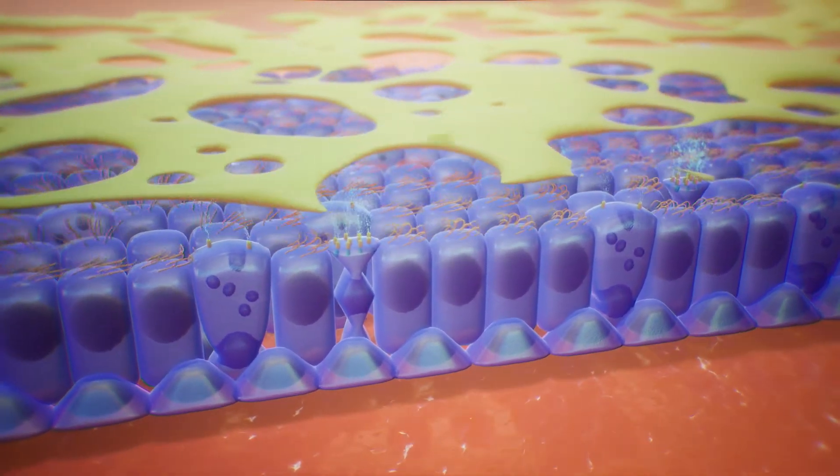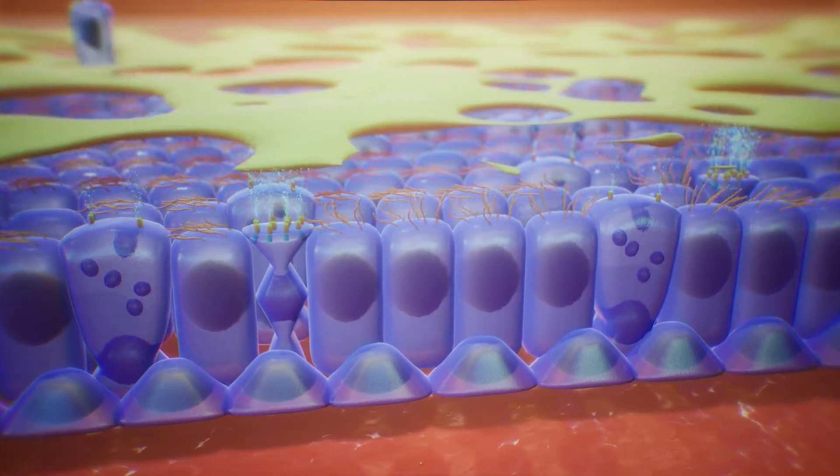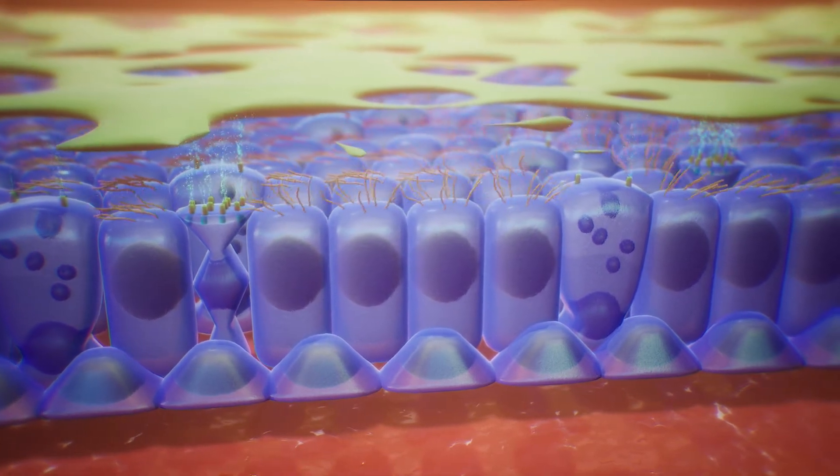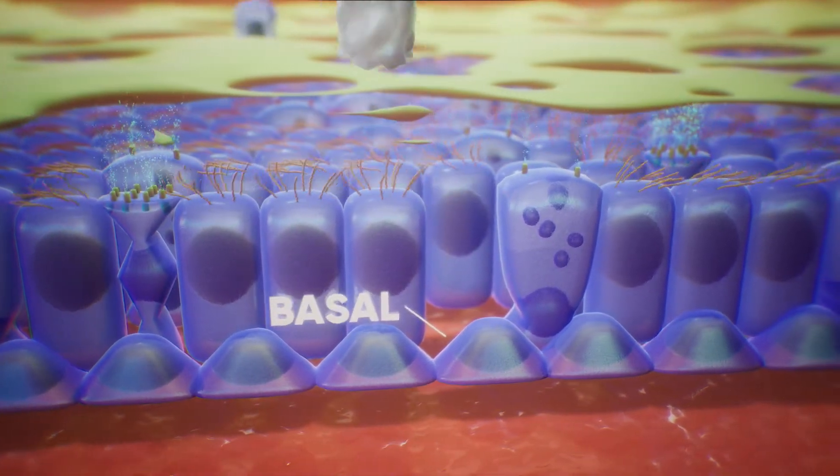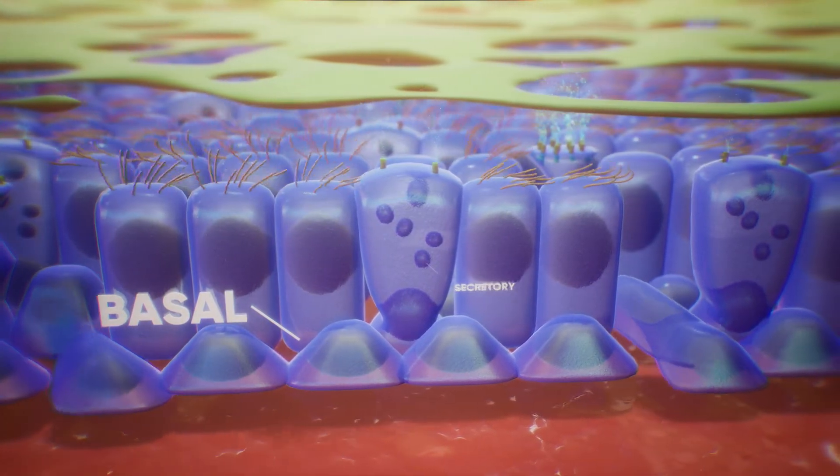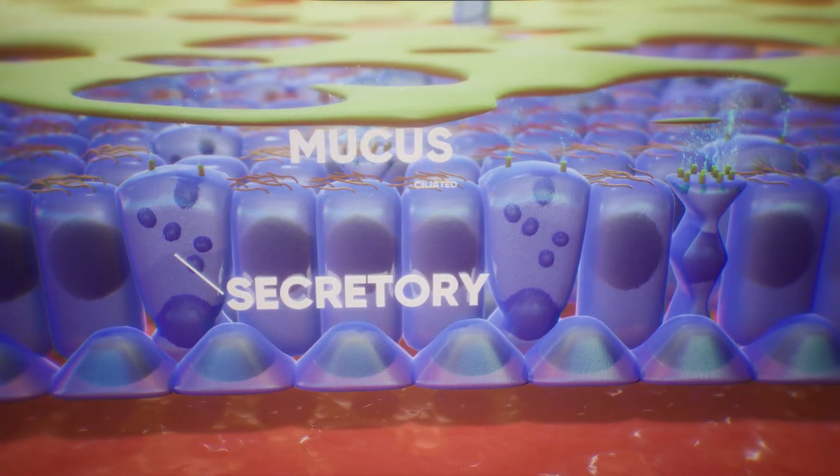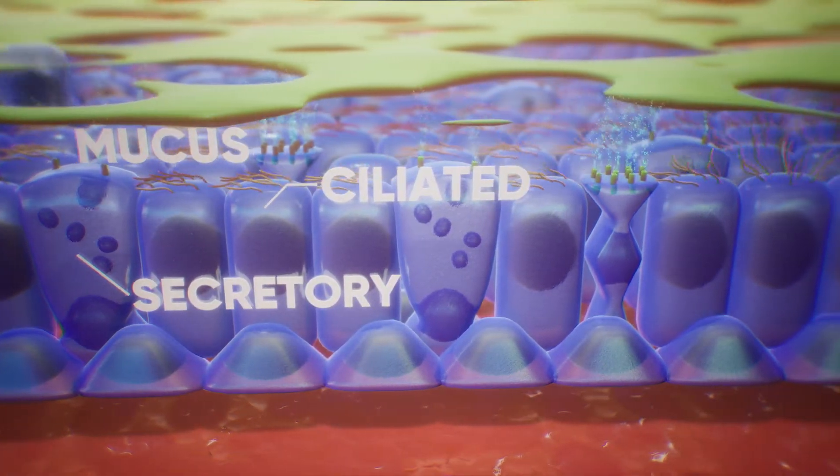Highly specialized cells that line the respiratory tract help protect airways from invading microbes, infection, and injury. At the innermost layer, basal cells are constantly replacing damaged and aged cells. Secretory cells release mucus into the airway to trap foreign particles, while ciliated cells move the mucus up and out of the lungs.